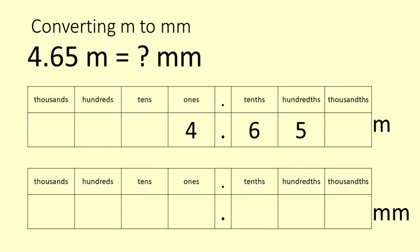We have 4.65 metres and we wish to convert it to millimetres. We multiply by 10, by 100, by 1000 and put in the placeholders and we have 4650 millimetres.